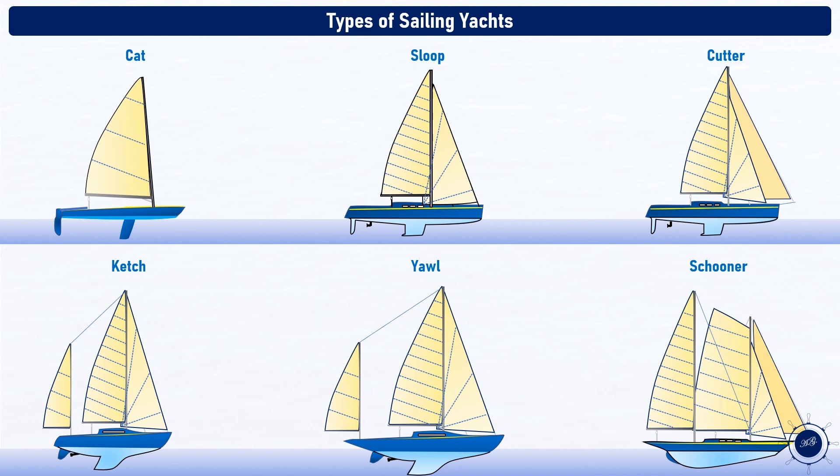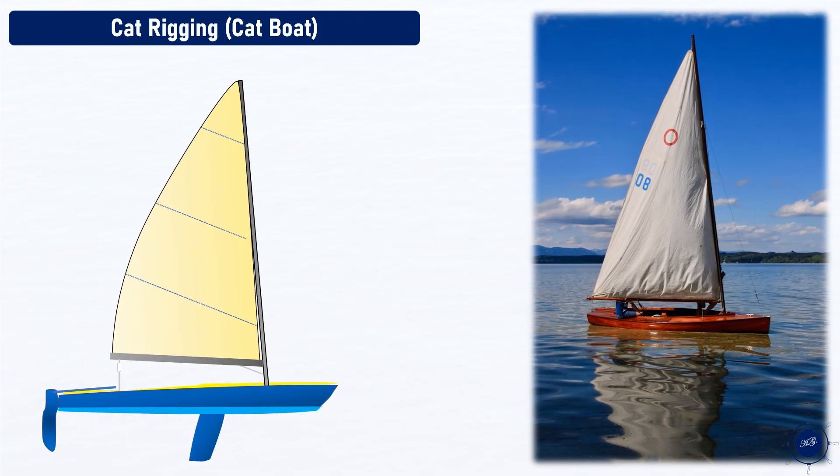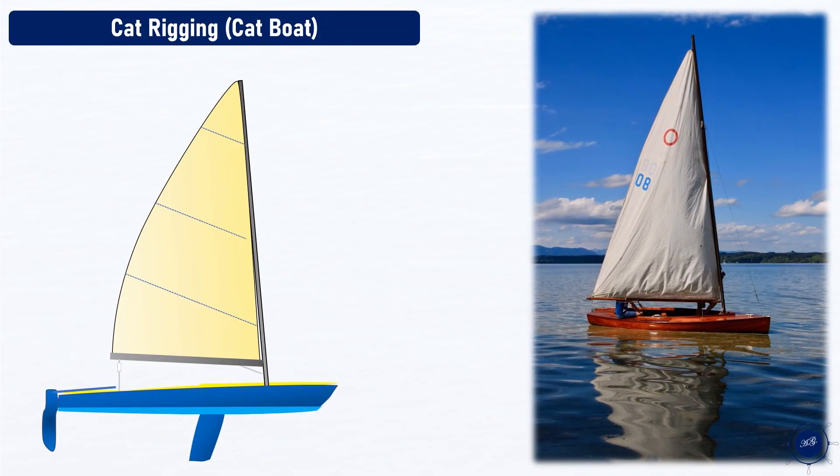Let's go through these types in more detail. We start with simplified rigging — the cat rigging. Here we see a Laser with a cat rig. Cat rig, or cat rigging, refers to a type with no headsails.